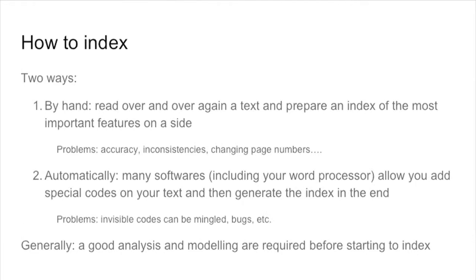There are two ways for doing an index. The first one is to do it by hand — you have your text somewhere and you take a piece of paper or another computer and you start typing down every time you find something you want to put in the index. The problem with that is it may be inaccurate, you may forget something, it may be inconsistent, and sometimes when you have added all the page numbers and references, you add something and you have to start again because the structure has changed.